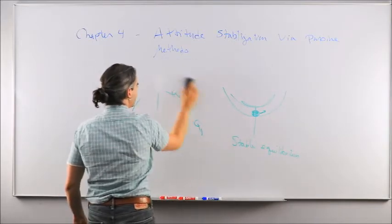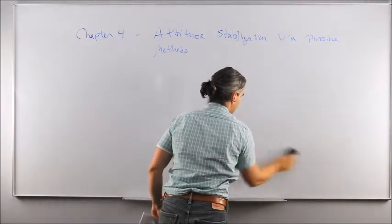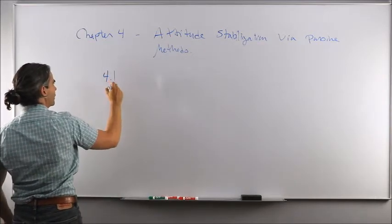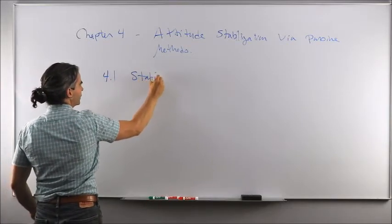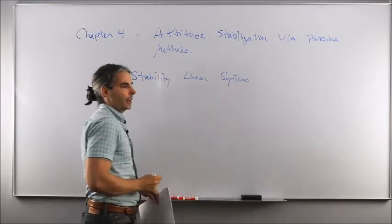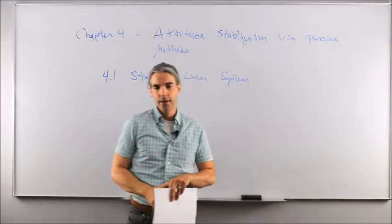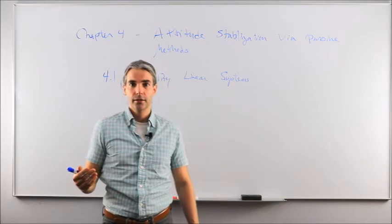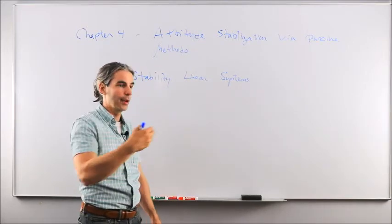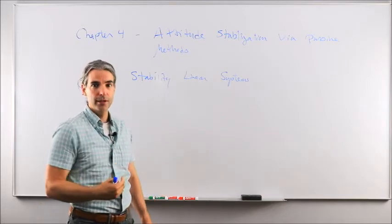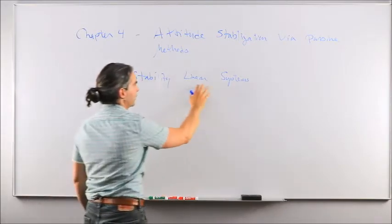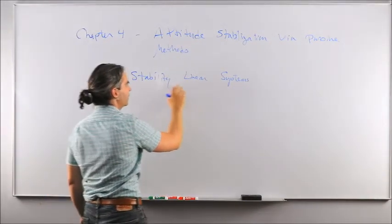Those techniques are again spin stabilization, dual spin stabilization, and gravity gradient. In section 4.1, I want to review the concept of stability of linear systems. If we assume the inertia matrix of the spacecraft is defined with respect to a principal axis body-fixed reference frame, we can decouple Euler's equation of motion into three separate scalar equations — and those three equations end up being linear. So how can we infer the stability of linear systems?